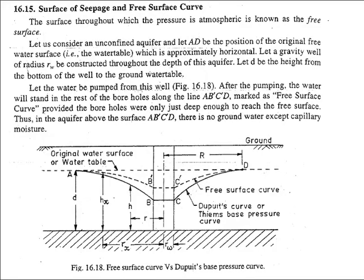Now we move to the new topic: the free surface curve or the surface of seepage. This diagram shows the ground level with the original water table indicated by a dotted line. This is the well that we have sunk down to the impervious layer — an example of an unconfined aquifer. rw is the radius of the well, and the depth of the drawdown is shown. The region is defined as the free surface curve.